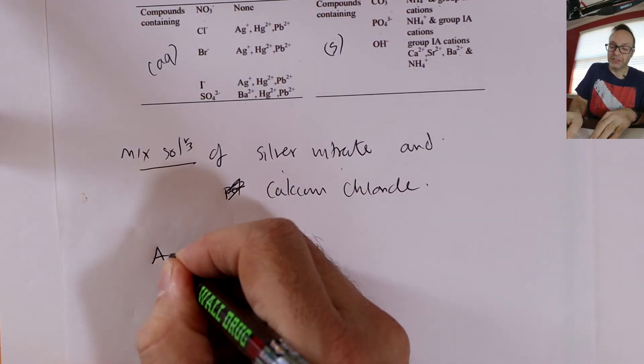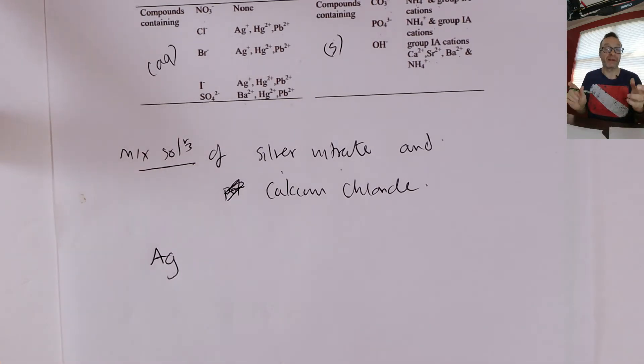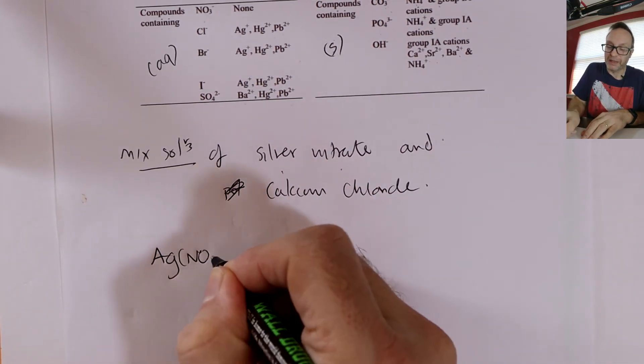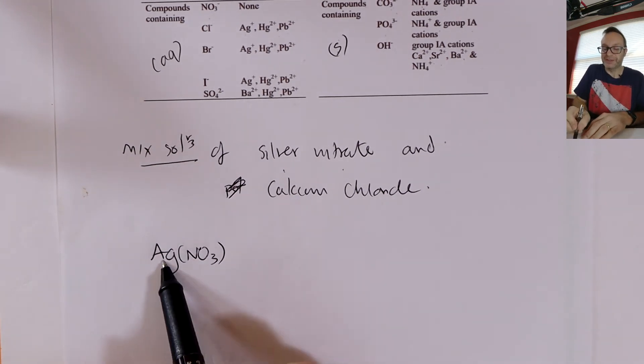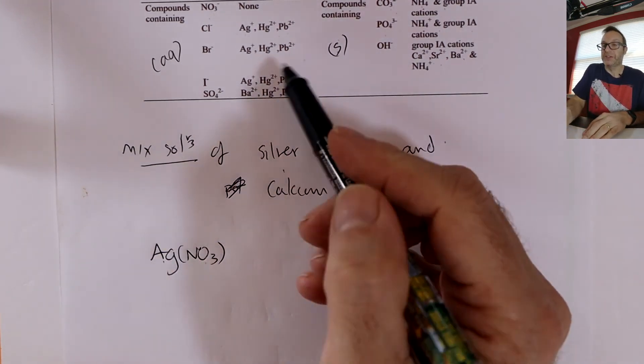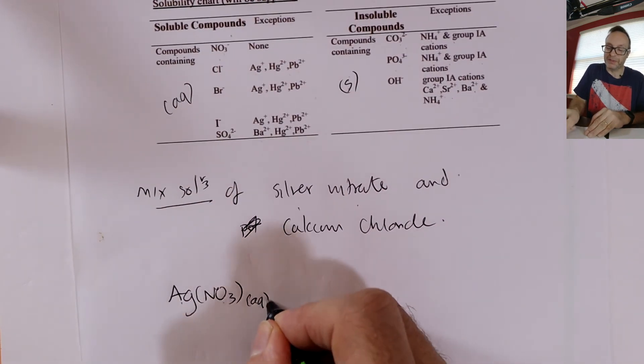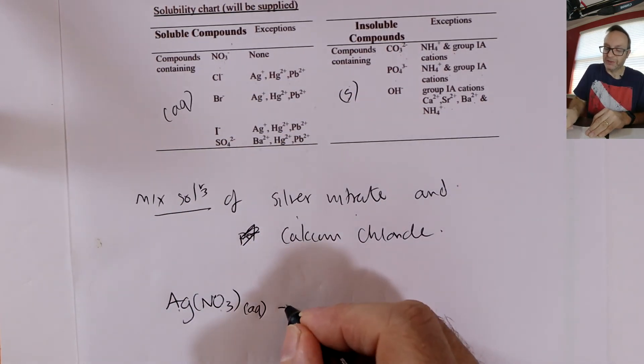So silver nitrate. It's going to be Ag. Do not include charges in formulas unless they're separate. Remember that. Silver nitrate. Now I like to write my molecular ions in brackets. You don't have to do that if it's one of them, but you can. So that's silver nitrate, AgNO3. Look at my chart here real quick. Well all nitrates are soluble, so that's aqueous. Again it must be soluble because it's a reactant, but we can just confirm.